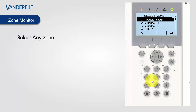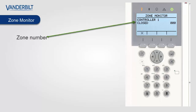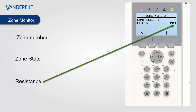In order to use the tool we can select any zone on the system. The zone overview will display the status of the zone and its location. This zone is located on controller 1. If the zone is located on an expander this will also be displayed. We can see that the zone state is closed, and when the zone changes state this will update. We can also see the live resistance of the zone, which can be useful for determining if the wrong end-of-line has been selected.